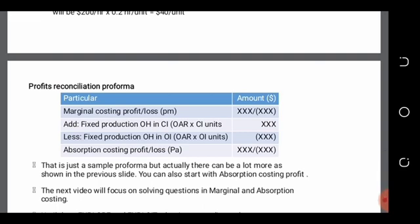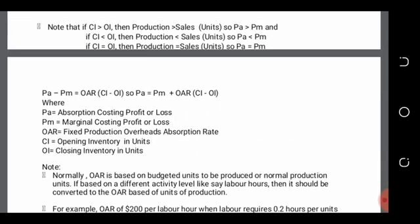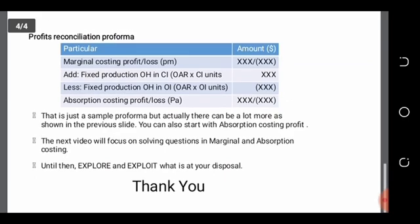The mathematical equation can be summarized in a table as follows: we use the marginal costing system profit to arrive at the absorption costing system profit. So: marginal costing profit (Pm) plus fixed production overheads in closing inventory, less fixed production overheads in opening inventory, equals the absorption costing profit. This is a sample proforma — you may rewrite the equation starting with the absorption costing profit or loss; that is your decision. Explore and exploit what is at your disposal.